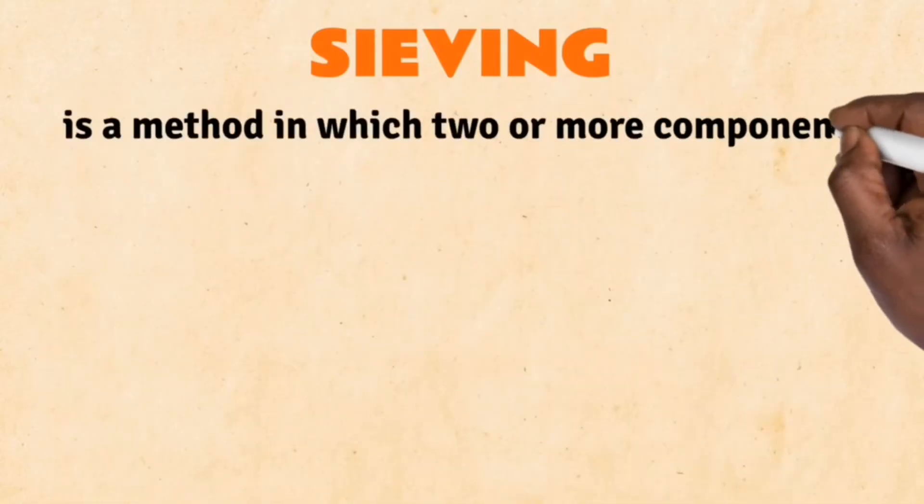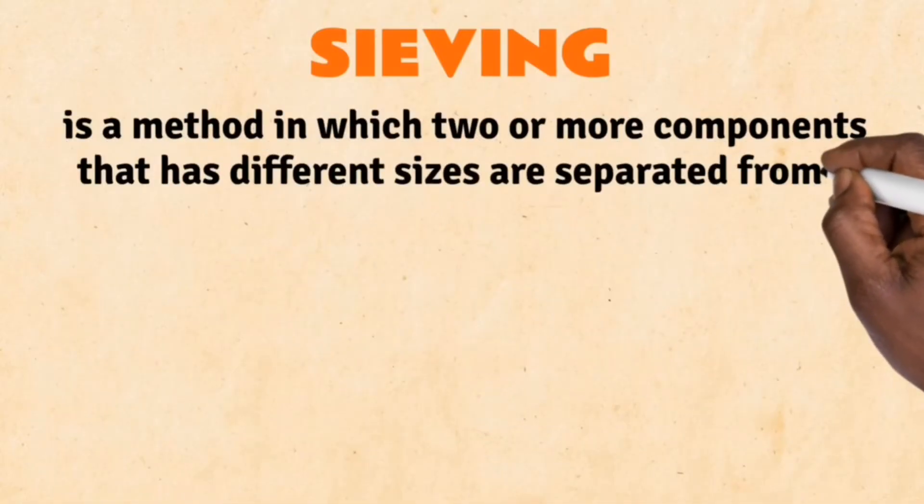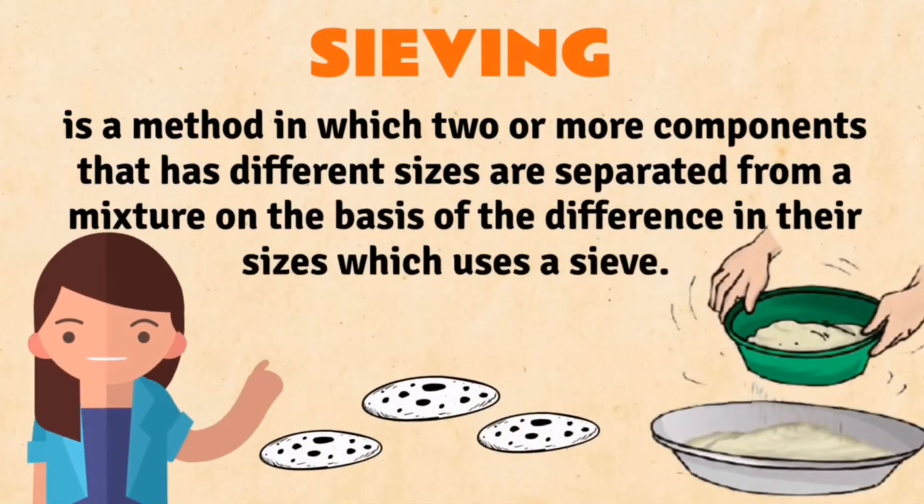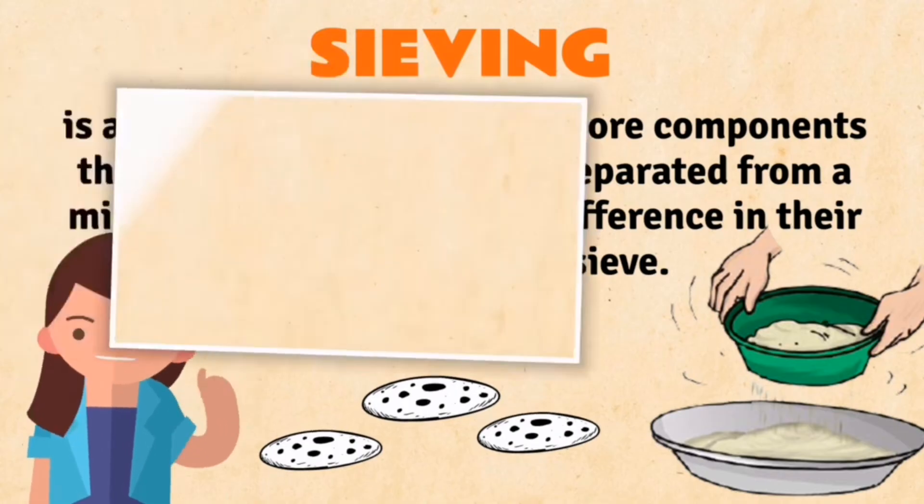Sieving. Sieving is a method in which two or more components that have different sizes are separated from a mixture on the basis of the difference in their sizes, which uses a sieve.